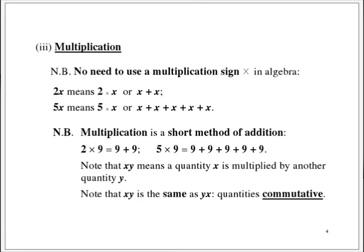The third of the 4 basic rules: multiplication. Remember, there is no need to use a multiplication sign in algebra. 2x means 2 multiplied by x, understood. Or x added 5 times over.